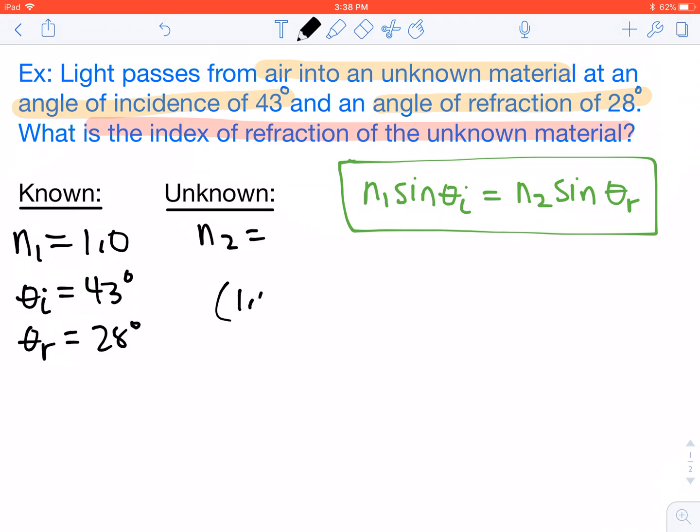So N1 is 1.0 times the sine of 43 degrees. That's going to equal our N2 that we don't know times the sine of 28 degrees.